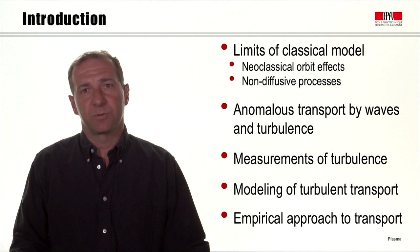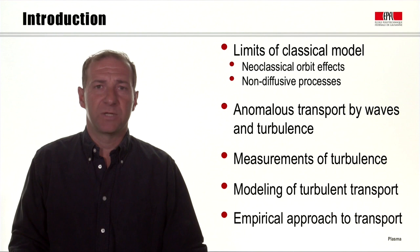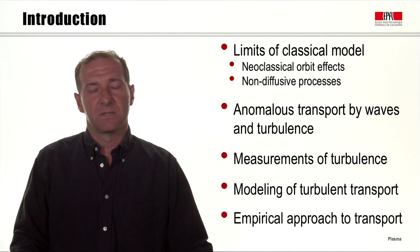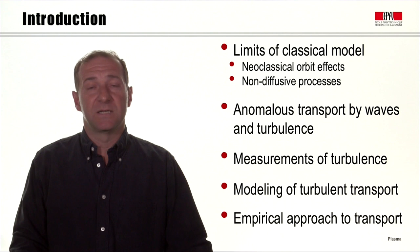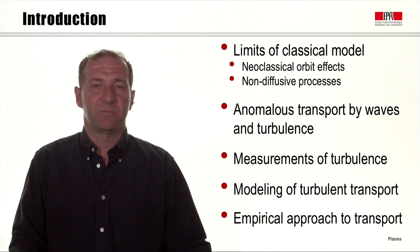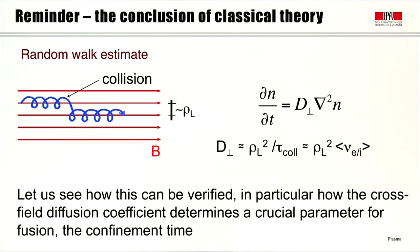We will focus primarily on the so-called anomalous transport — the transport caused by the presence of turbulence in a plasma. Turbulence is developed from waves and instabilities that are naturally occurring in fusion plasmas. We will highlight how to measure turbulence in plasmas, providing a couple of examples, and the difficulties of modeling turbulence and its consequences. We will then focus on the empirical approach to transport and how we can make predictions for future devices based on present experiments.